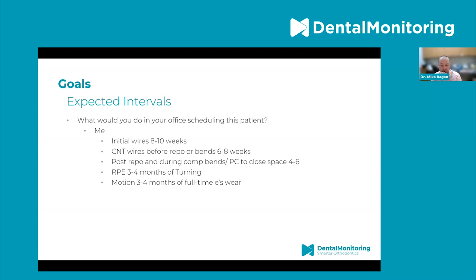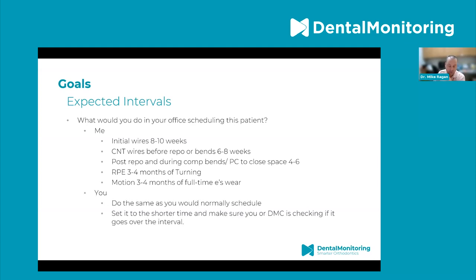When setting your goal interval, the bottom number in that selection should match what you would have done if you were scheduling them back for that individual thing. With my initial R2R, we used to see them at eight to ten week intervals, so we set that lower goal at eight weeks. For regular visits with copper night tie wires, six-week intervals. Repo visits every four weeks. RPE and motion, we set them every three months. Whatever your normal interval is expecting that change to have happened — do the same with your goal. If you had a range, say six to eight weeks, set it to the shorter time.